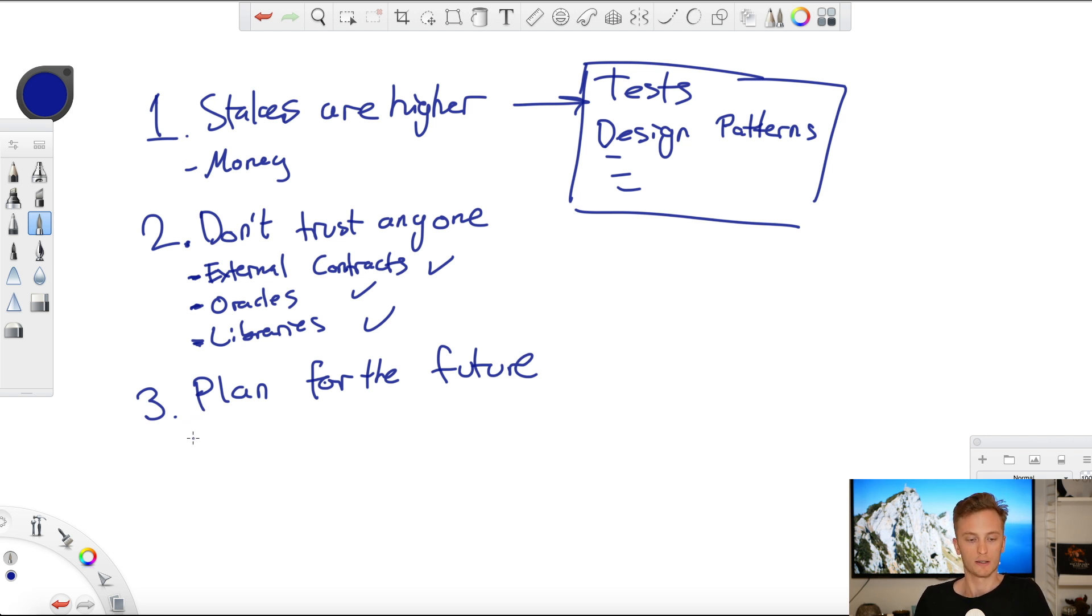It is true that there exists such a thing as upgradable smart contracts. That is quite tricky. We can use, for example, proxies to build upgradable contracts. This we also teach you in the course—the security course, the smart contract security course.